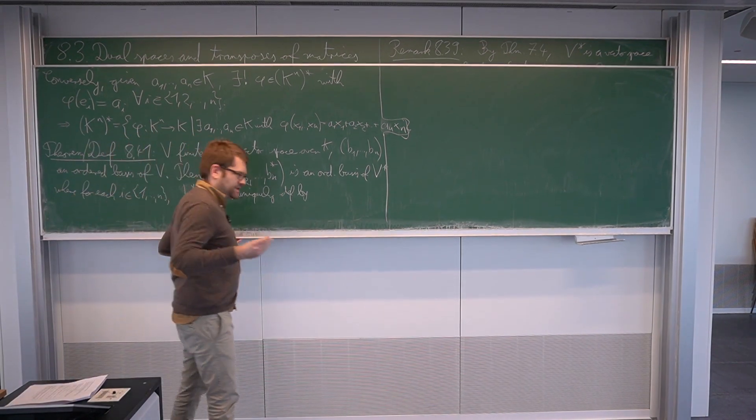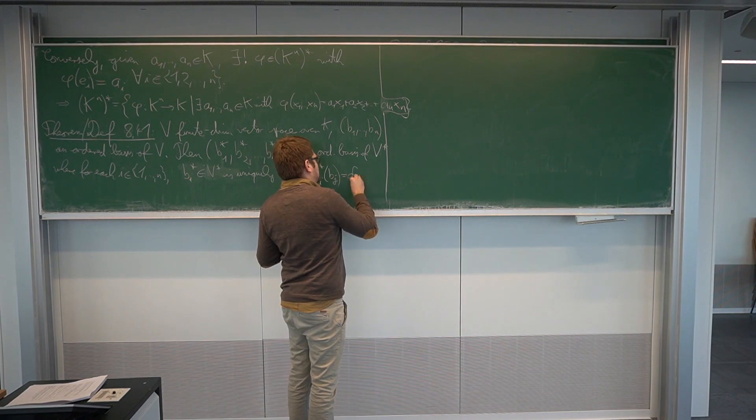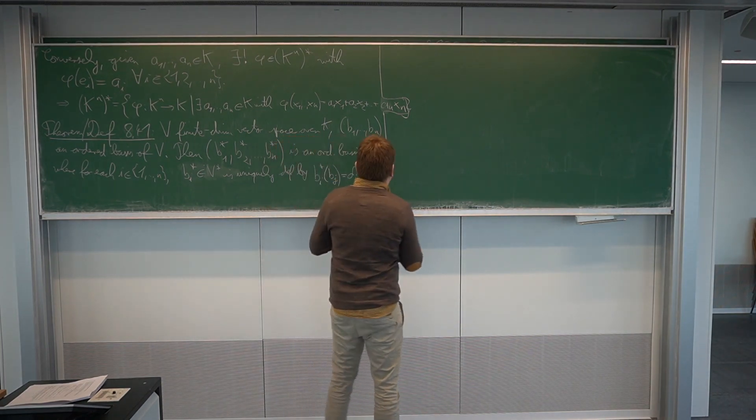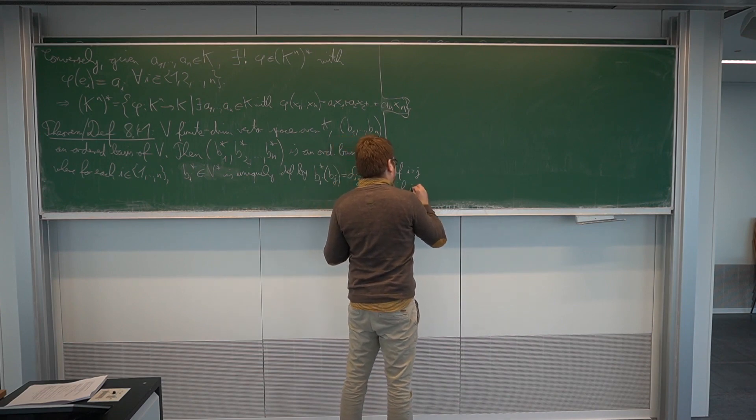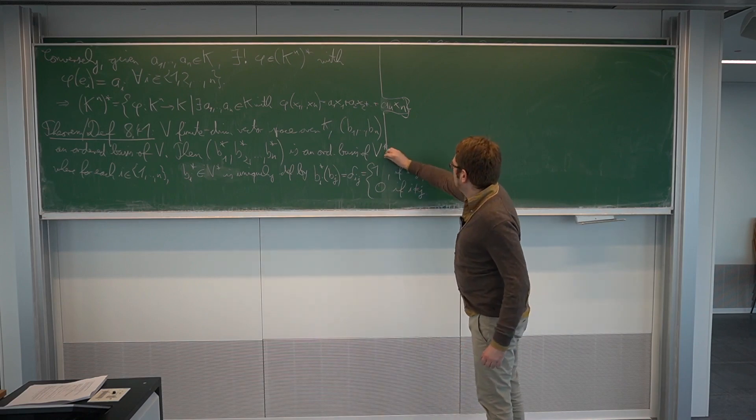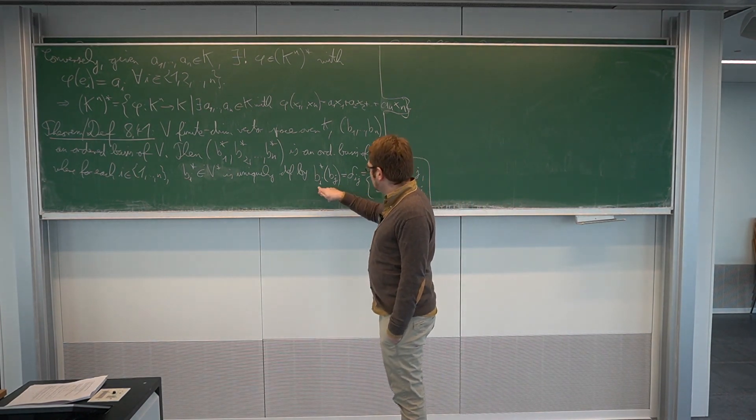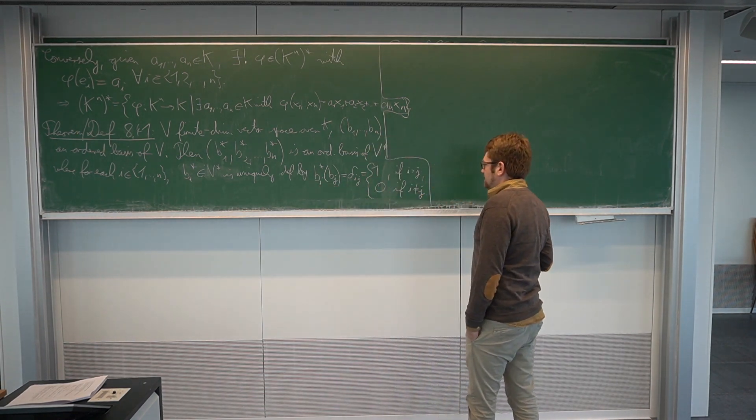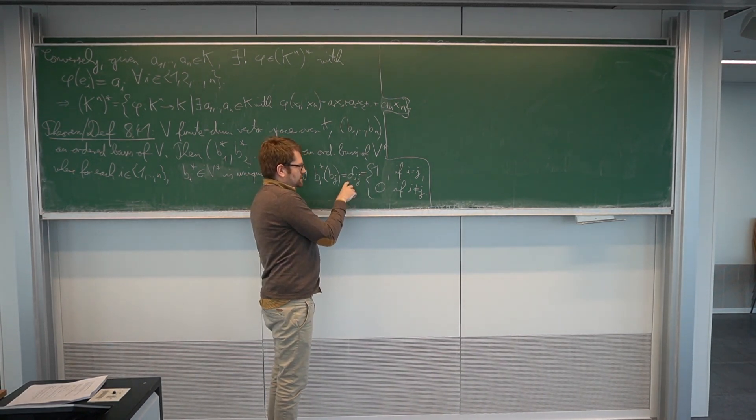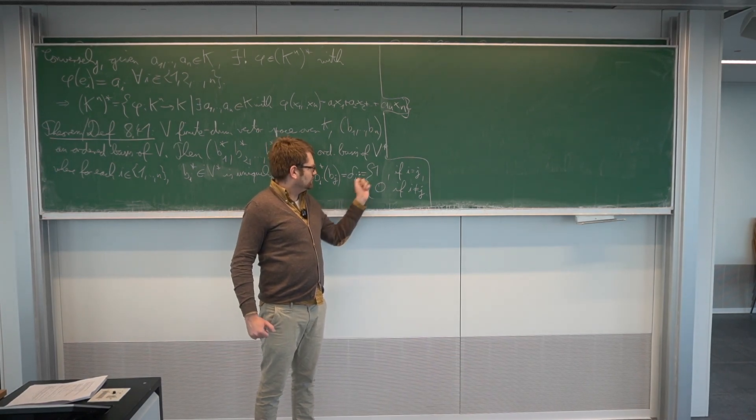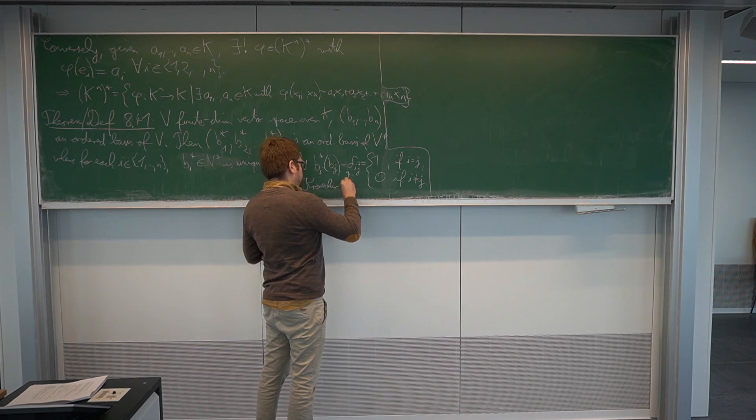Where for each i between 1 and n, bi upper star in v upper star is uniquely defined by, so we just need to know the values of this bi upper star on the basis. And we want to define this in this way, bi upper star of a basis vector bj of this basis is delta ij, and this notation means it is 1 if i is equal to j, and 0 if i is not equal to j. This symbol here, this delta ij, is by definition just this. This symbol is sometimes called the Kronecker delta.